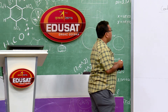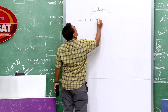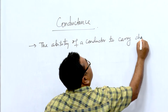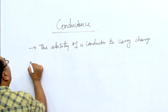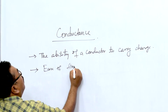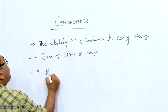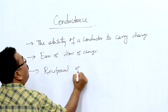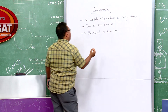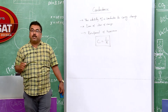Qualitatively, conductance is the ability of a conductor to carry charge, or the ease of flow of charge. Quantitatively, it is simply the reciprocal of resistance: C = 1/R.